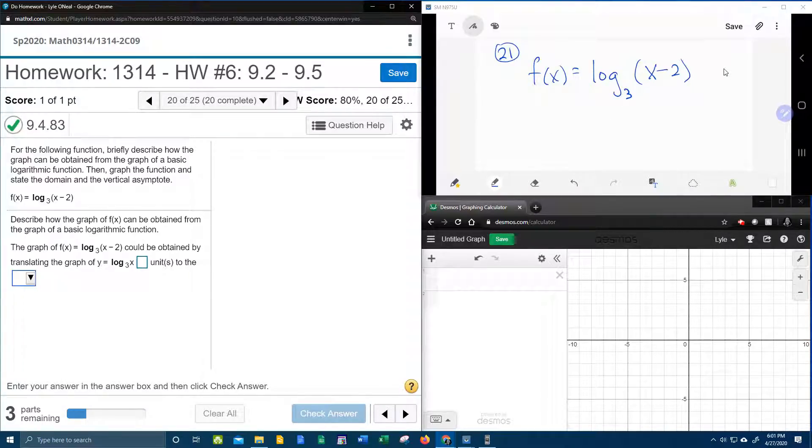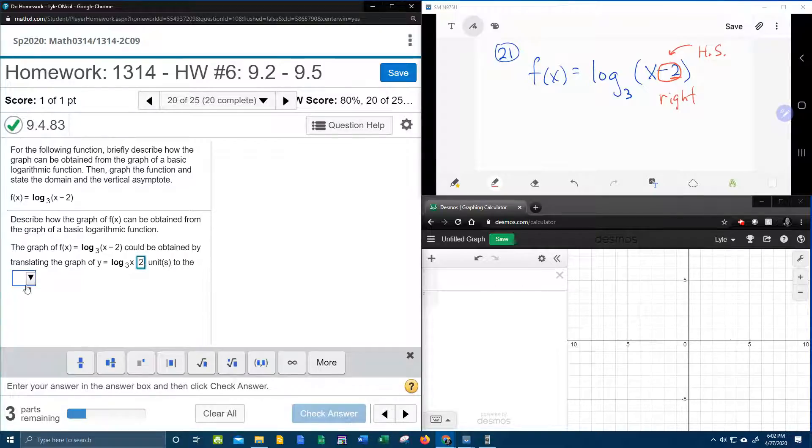So over here in this window, let's look at what transformations are given. Here we can see that there is a minus 2. Notice that it is inside the log function, directly attached to the x, and that means that this is a horizontal shift. If you have a number added or subtracted within the function directly to x, that is a horizontal shift. Plus is left, minus is right. So this is going to be a shift of 2 units to the right. Let's see if I'm right. 2 units to the right. Check it.